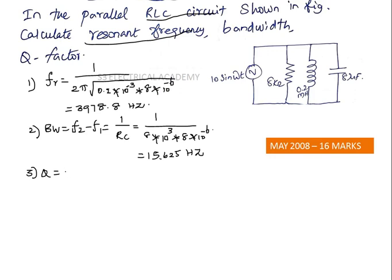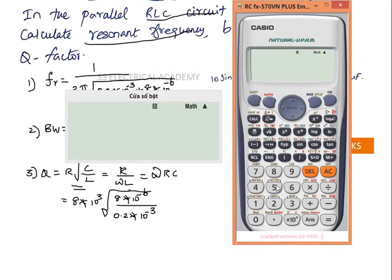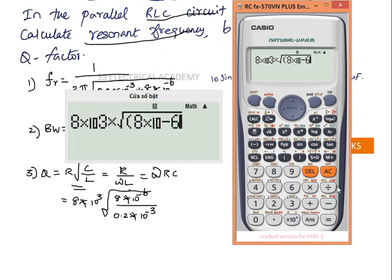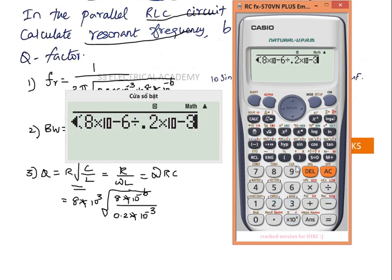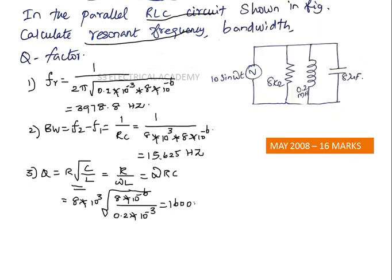Quality factor Q = R·√(C/L), or equivalently R/(ωL) or ω·R·C. Using Q = R·√(C/L): Q = 8×10³ × √(8×10⁻⁶ / 0.2×10⁻³) = 8×10³ × √(0.04) = 1600. So for this circuit: resonant frequency = 3978.8 Hz, bandwidth = 15.625 Hz, quality factor = 1600. This question was asked in May 2008 for 16 marks.